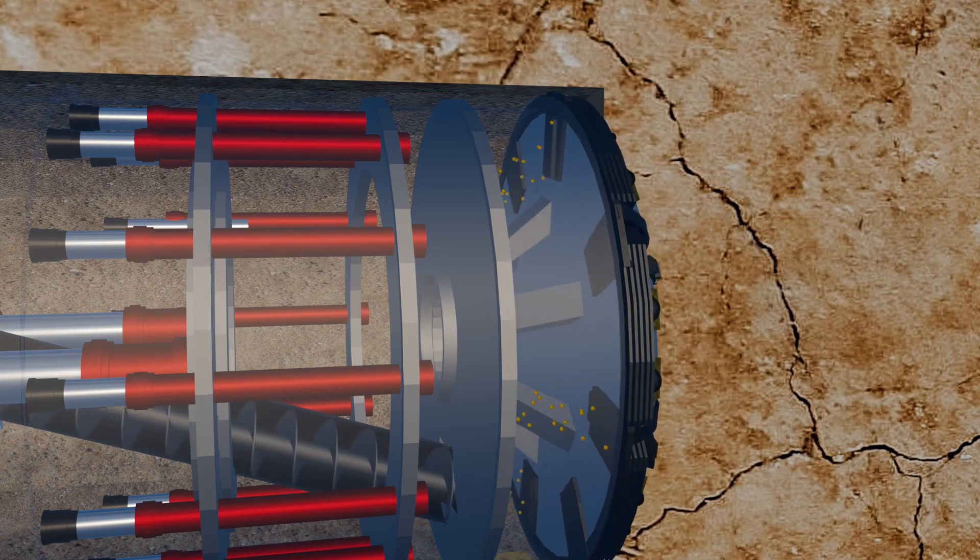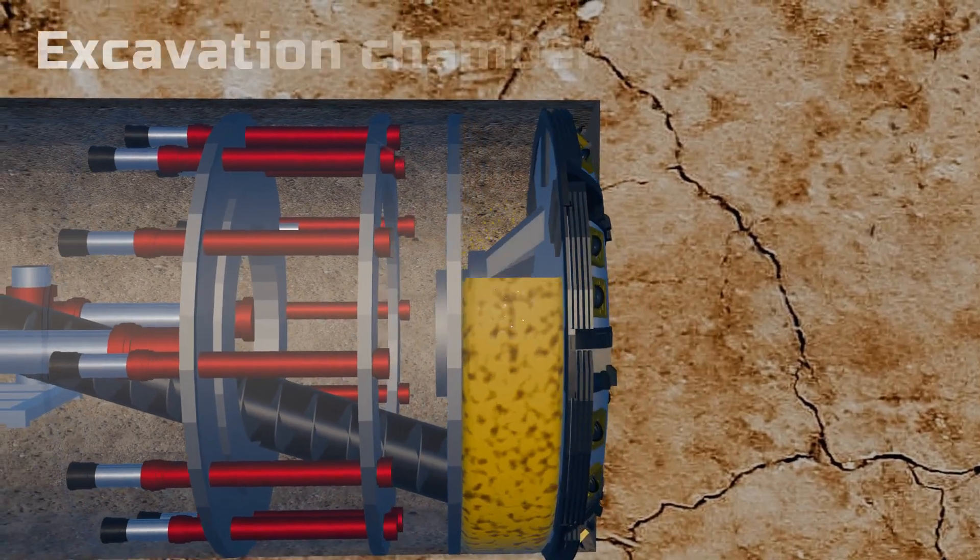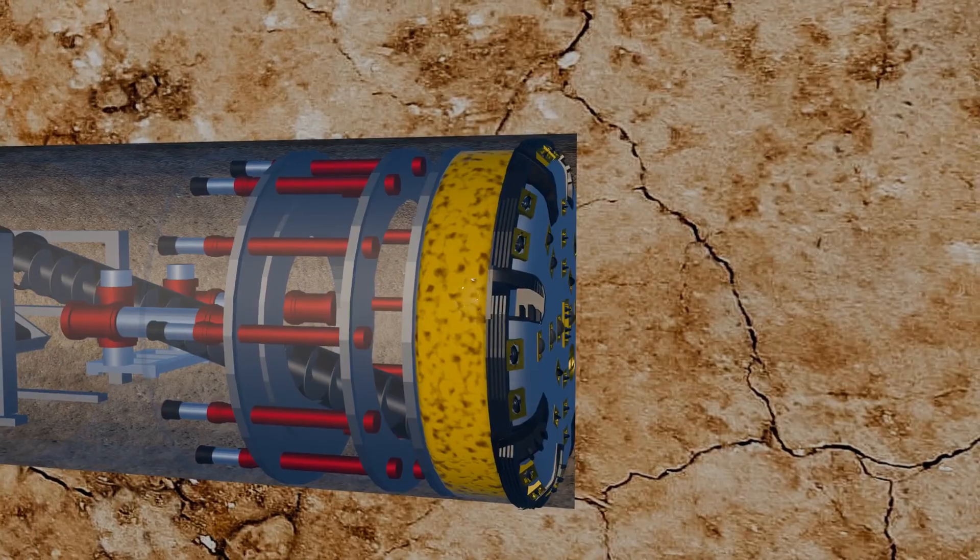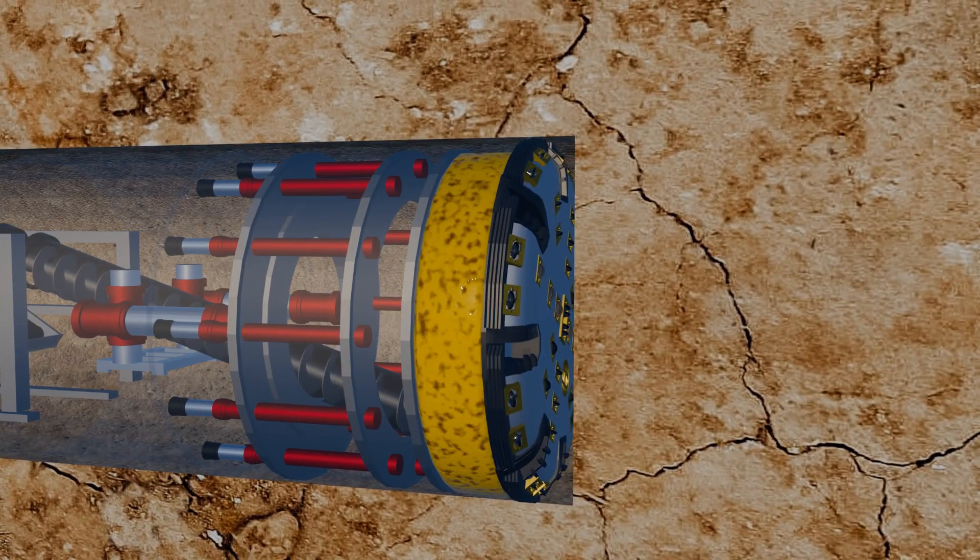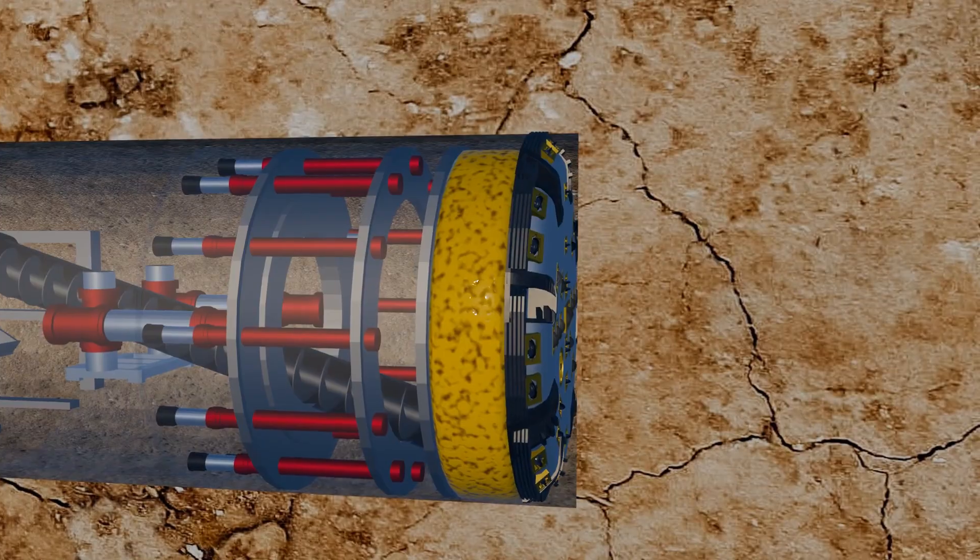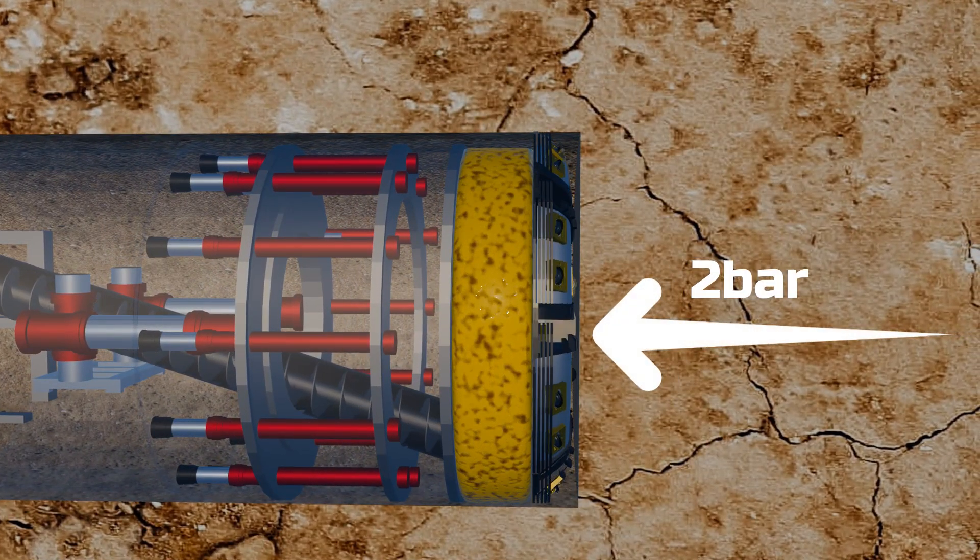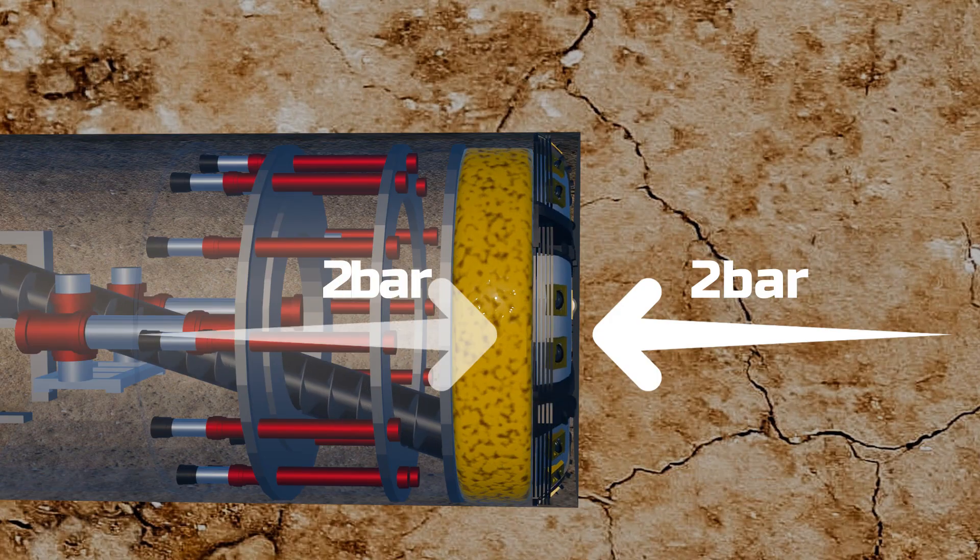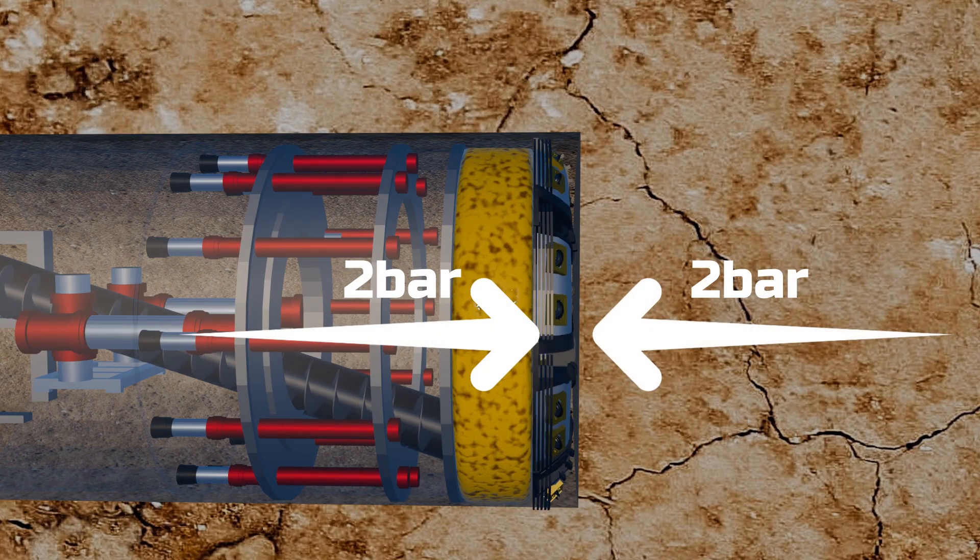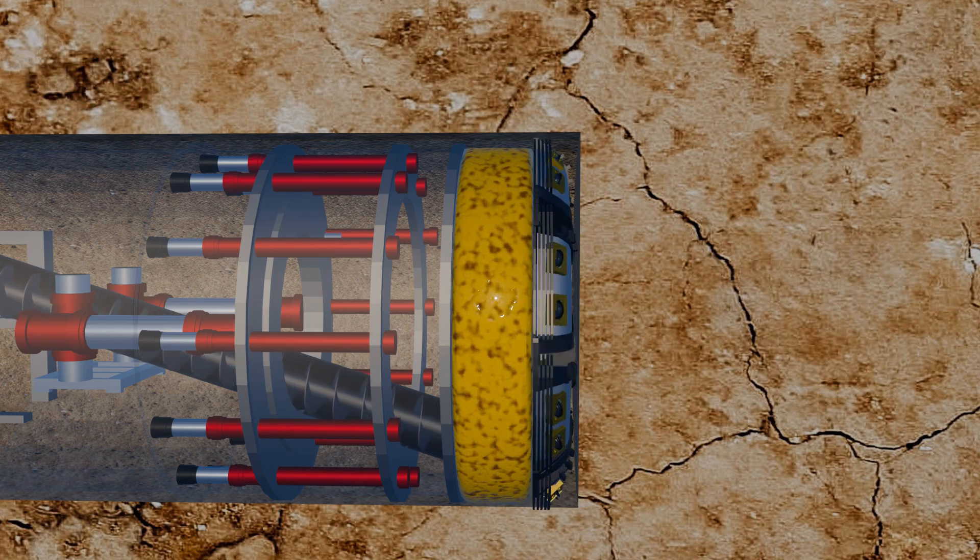The head of the TBM endures tremendous water pressure, and just behind it lies the excavation chamber, where the chalk marl waste is temporarily stored after being cut. To understand the balancing process, imagine the TBM head is subjected to two bars of water pressure. For stability, the TBM head must maintain an equivalent two bar pressure on the face of the tunnel. Failing to do so would result in the tunnel collapsing. To achieve this balance, the excavation chamber is filled with chalk marl waste, which helps the TBM head counteract the external water pressure effectively.